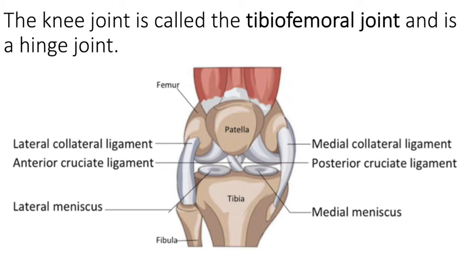There are two other important ligaments: the ACL or anterior cruciate ligament, and the PCL or posterior cruciate ligament — cruciate meaning crossing, as those two ligaments cross each other. They prevent the femur from slipping out of alignment with the tibia. These experience a lot of injury, particularly the ACL, because of the torsional forces the knee can experience in activities like snowboarding, skiing, or landing while attempting a slide tackle in soccer. A torn ACL is something you've probably heard of.